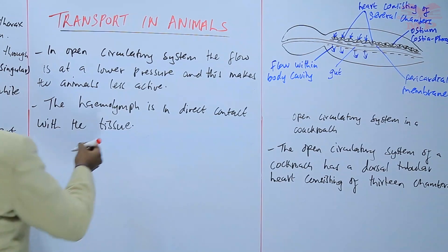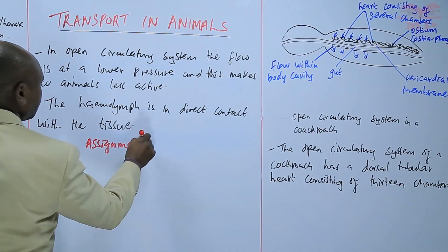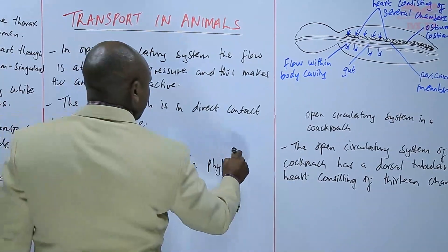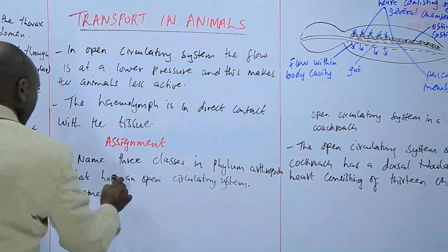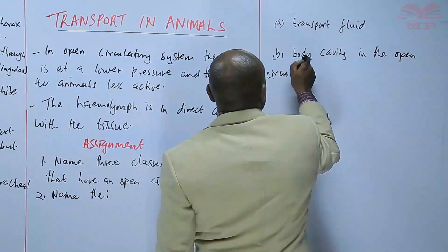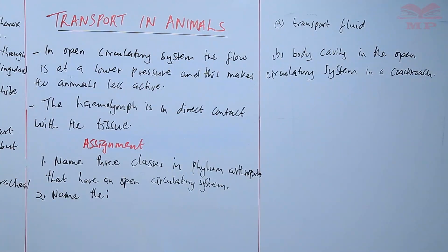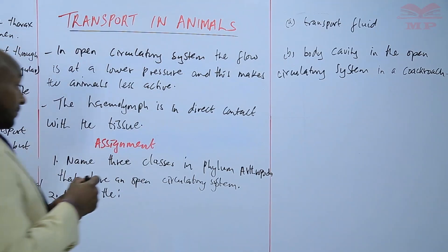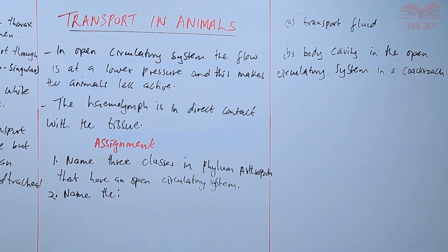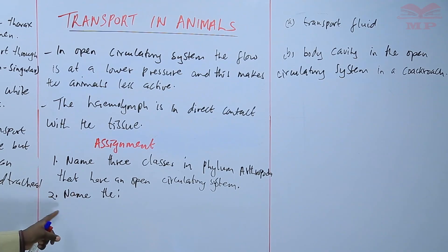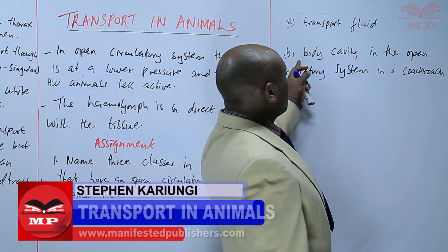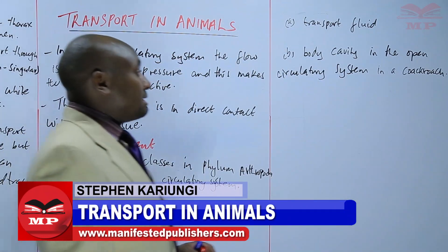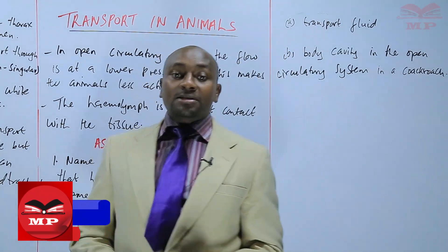So we'll stop there and have a short assignment on the open circulatory system. Question one: name three classes in phylum Arthropoda that have an open circulatory system. Question two: name the transport fluid and the body cavity in the open circulatory system in a cockroach. We'll stop there until next time. Goodbye.